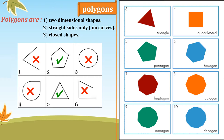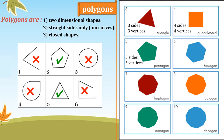The first shape is a triangle — it has three sides and three vertices. The second shape is a square, also called a quadrilateral, and it has four sides and four vertices. The next one is a pentagon — five sides and five vertices. Then hexagon — six sides and six vertices.